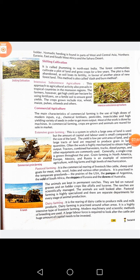Second type: shifting cultivation. It is called Jhum in Northeast India. The forest communities cultivate a plot of land and grow crops for a few years. The plot is then abandoned as soil loses its fertility, in favour of another piece of new forest land. This method is also called the slash and burn method.